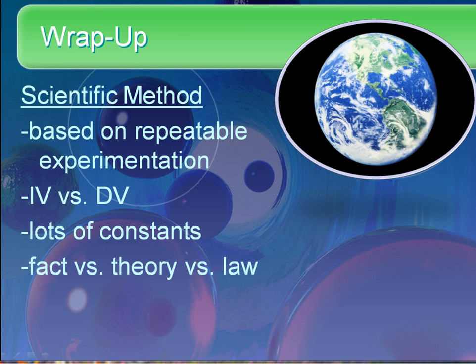To wrap things up: the scientific method is based on repeatable experimentation. The IV is your independent variable; the DV is your dependent variable. We have lots of constants. Facts are individual events that cannot be argued — for instance, the image of the Earth on the screen is blue, green, and white. A theory is a hypothesis that has grown up, one that has a great deal of supporting evidence. And a law is a mathematical explanation of how something happens.